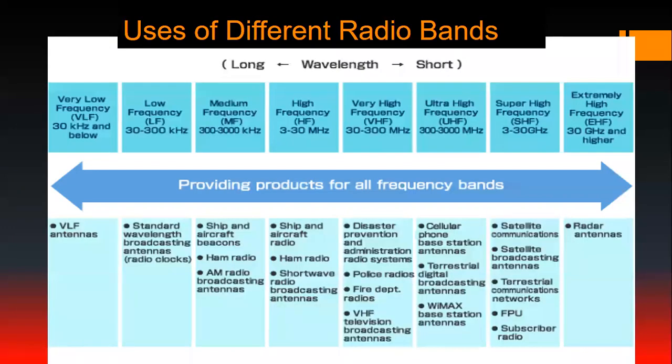Here is a chart showing applications for these different frequency ranges. Down at the low end, we see applications in communications with submarines. Low frequency is used for atomic clocks. Medium frequency is used for aircraft and AM radio. High frequency is used for amateur/ham radio as well as ship and aircraft communication. Very high frequency was very popular for commercial broadcasts — FM radio and most television broadcasts would come from VHF. UHF represents frequencies in the microwave range.